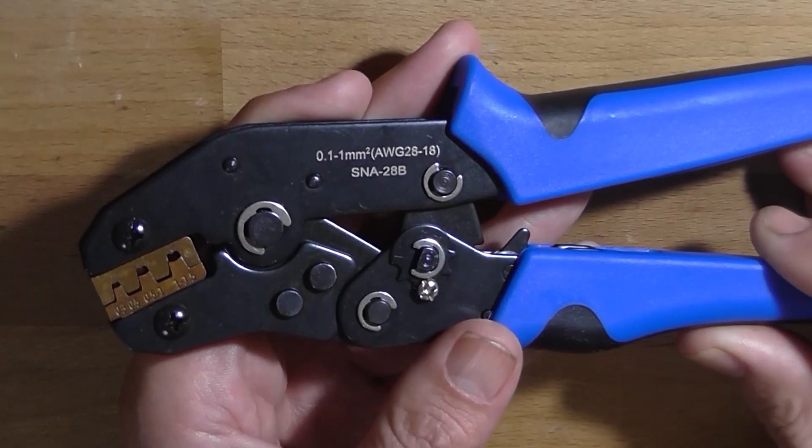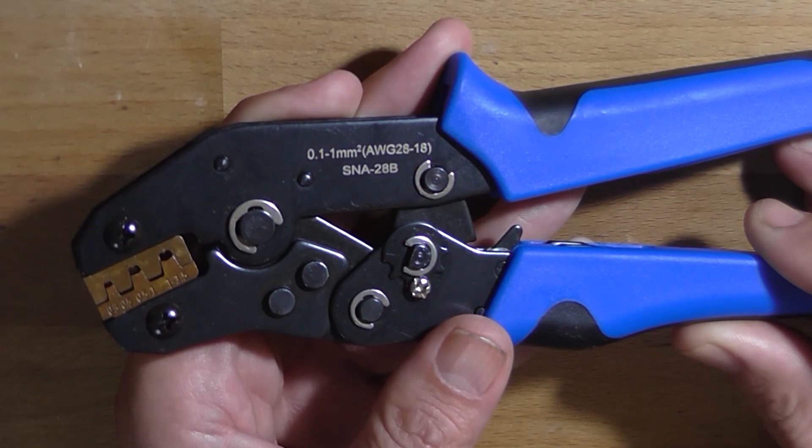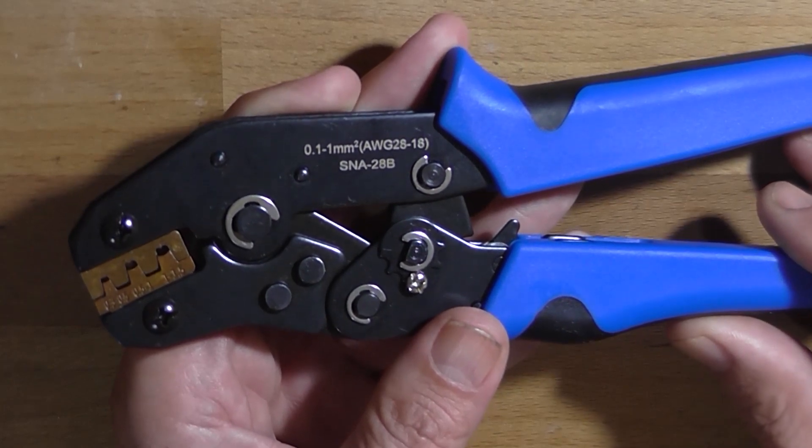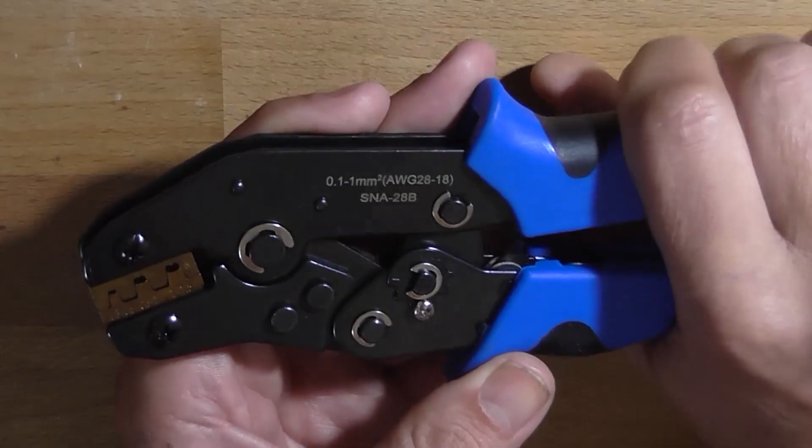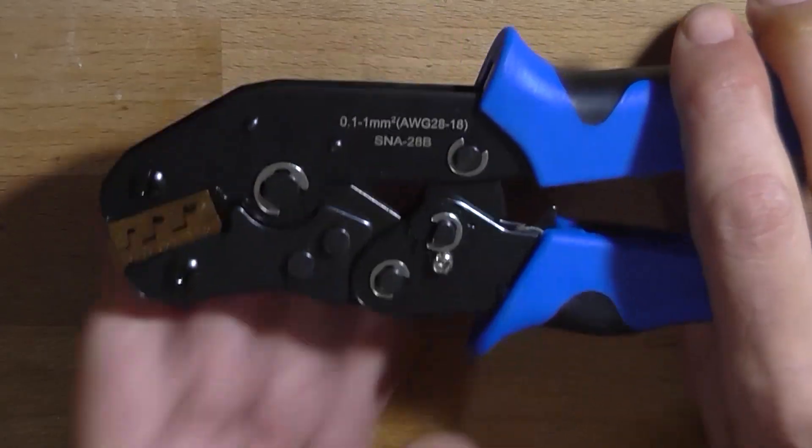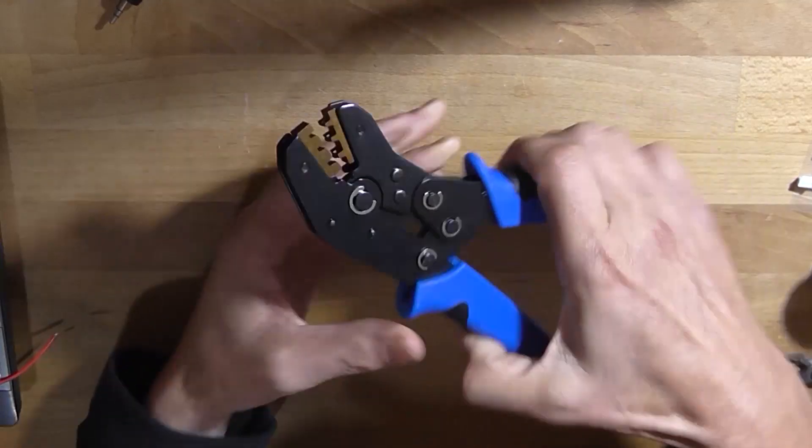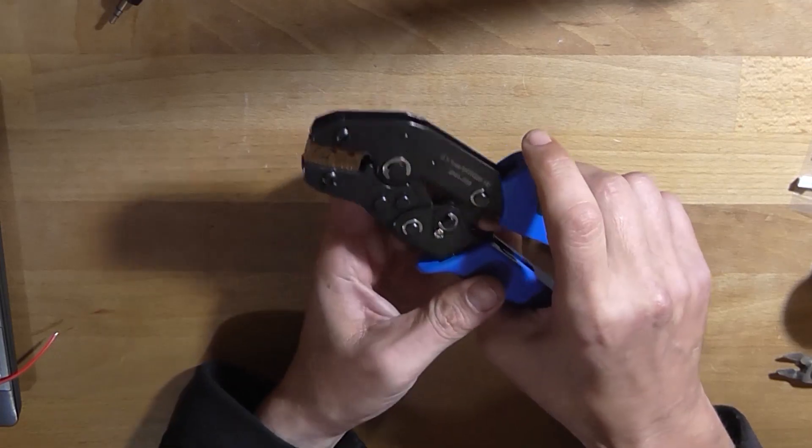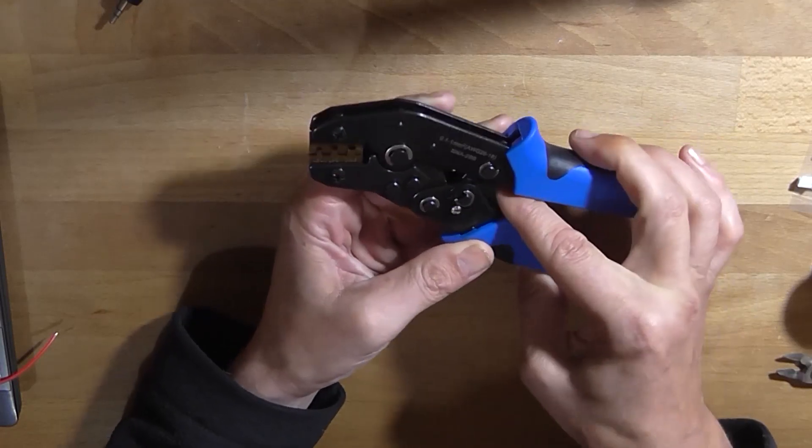So let's have a good look at the tool. This is a 0.1 to 1 millimeter squared AWG 28-18, and it's an SNA-28B model. It's got a ratcheting system inside of it. However, I can't seem to figure out how you unlock the tool. Oh hang on, there's a little catch there, and it locks in so you'd have to flip this lever after you've crimped to release it.